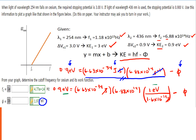Manipulating this equation gives us the work function equal to 1.95 electron volts. Due to rounding along the way, there is a slight difference in the answer, but 1.95 eV is within the tolerance value set in WebAssign and is acceptable.